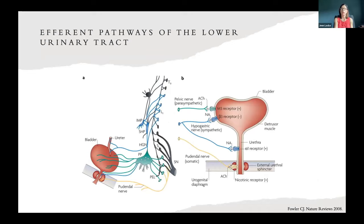The lower urinary tract consists of two major components: the bladder and the urethra. The bladder has an abundance of M3-M2 muscarinic receptors and beta-3 adrenergic receptors, and these are innervated by the parasympathetic cholinergic system and the noradrenergic sympathetic systems. I always think of parasympathetic to pee — PP — so parasympathetic causes contraction of the bladder, allowing you to void.